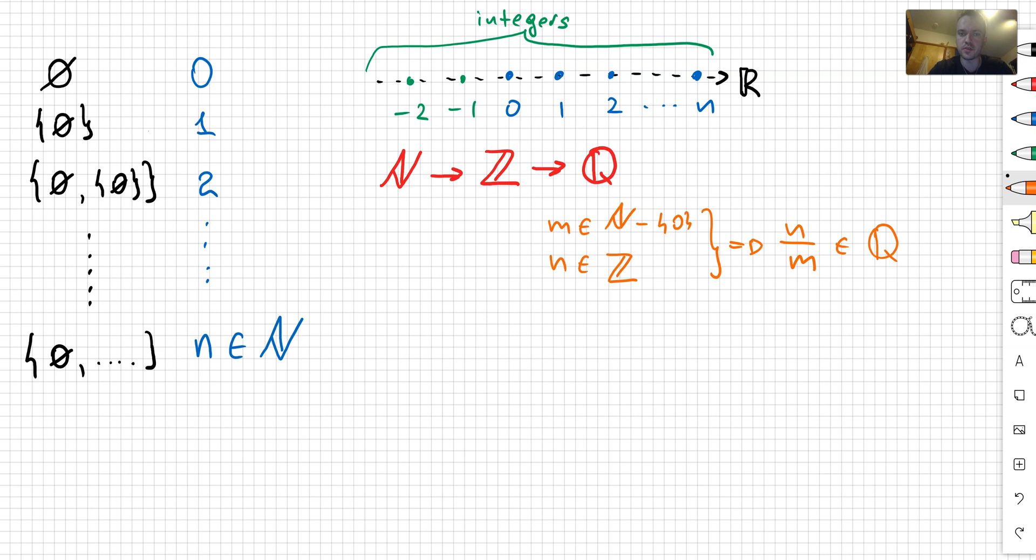One of the examples of a rational number: if I'm going to take, for example, n equals 1, m equals 2, then I'm going to make the fraction 1 half. And 1 half is going to be exactly here on this picture.